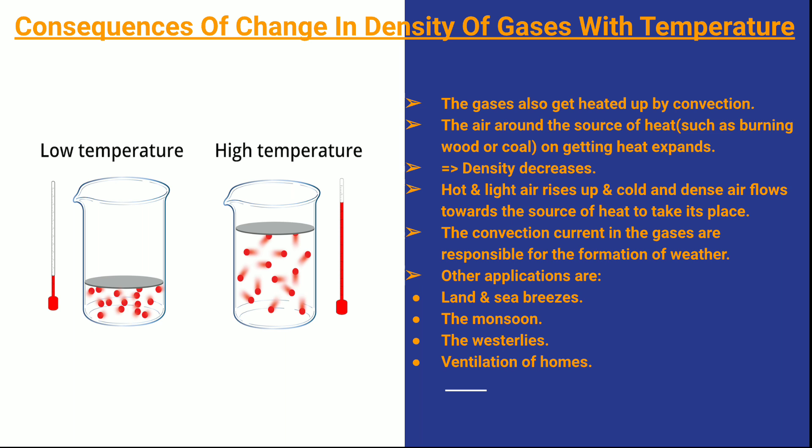Gases are also heated by convection current. The air around a source of heat, such as a burning flame, becomes heated and expands. Its density decreases and the hot, light air rises up. The cold, dense air from the surroundings then comes in to take the place of the hot, light air that has risen up. So convection current takes place in gases as well.